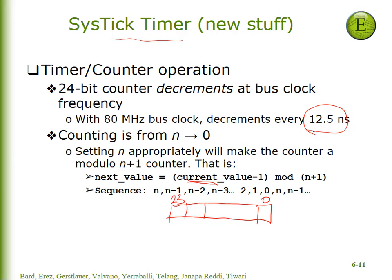We're going to set it up so it counts from FFFFFF — six F's. And then 12.5 nanoseconds later it will count down again to 0x00FFFFFE.